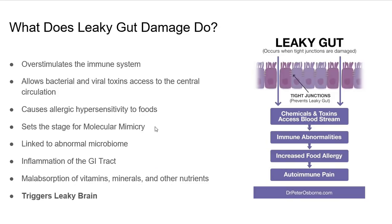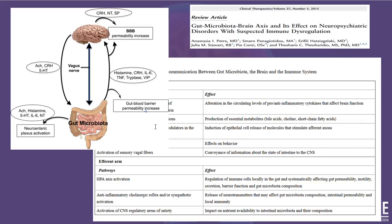Many people say, 'That's crazy talk, Dr. Osborne, what are you talking about? Leaky gut can't cause a leaky brain.' Well, let's take a look at the actual science on the matter. What you're seeing here is directly coming out of the journal Clinical Therapeutics — this is from 2015. You can see that gluten's impact on the gut microbiota creates gut-blood barrier permeability. This image comes directly from this scientific study. That leads to an elevation in things like histamine, interleukin-6, and TNF — tumor necrosis factor — that actually cause permeability in the blood-brain barrier, or BBB. In essence, leaky gut causes leaky brain.